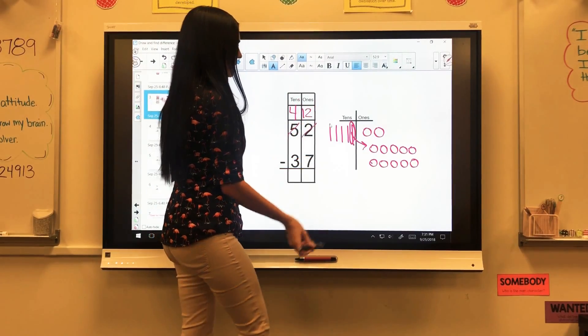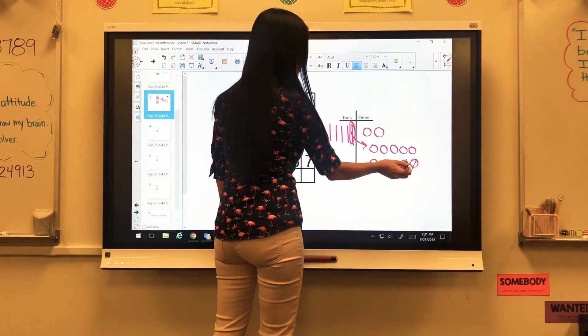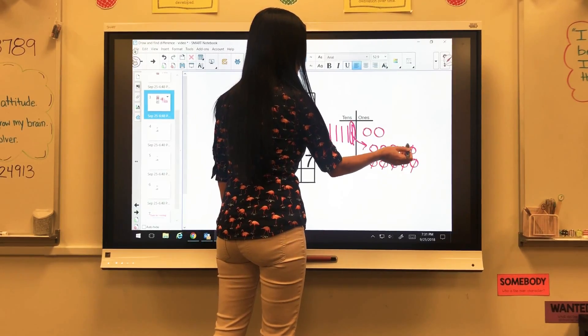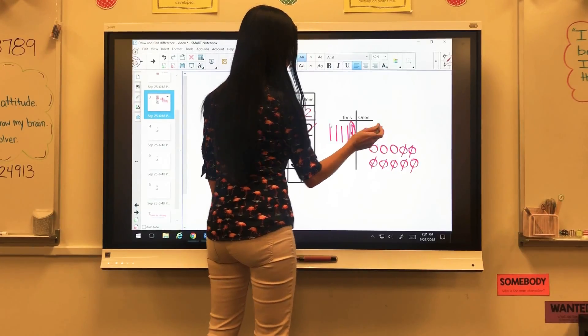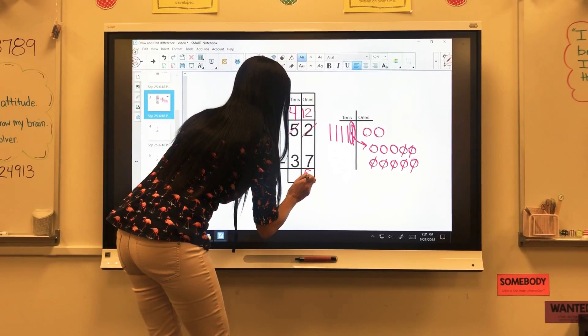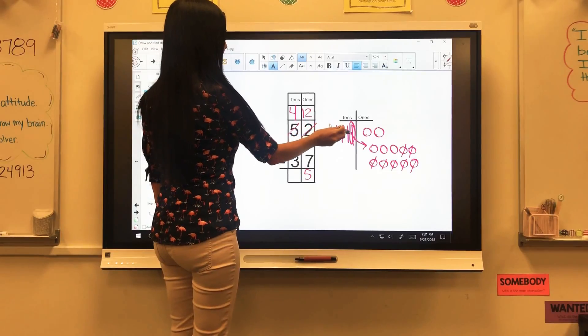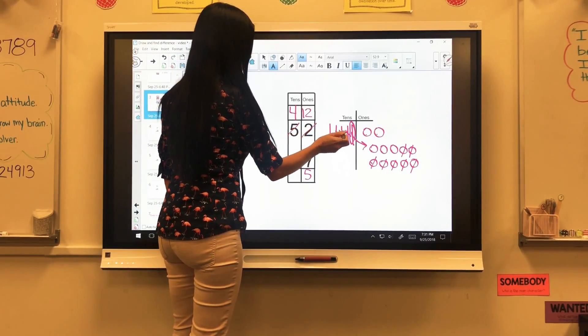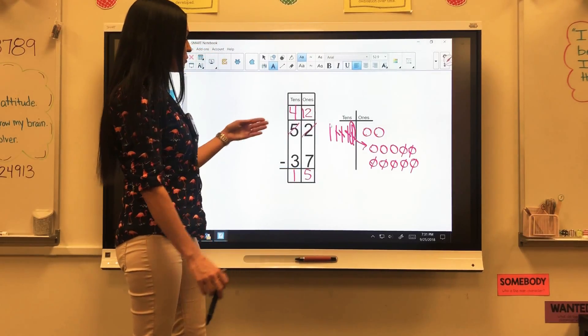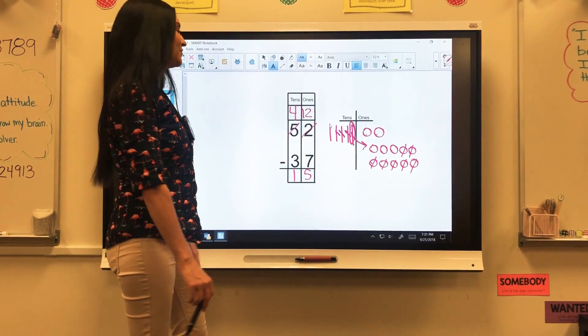So now I have 12 minus 7 and I can do that. 1, 2, 3, 4, 5, 6, 7. And that leaves me with 1, 2, 3, 4, 5. And then I'm going to come to my tens side. I have 4 and I need to take away 3 of them. 1, 2, 3. That's going to give me 1 left. So 52 minus 37 is 15.